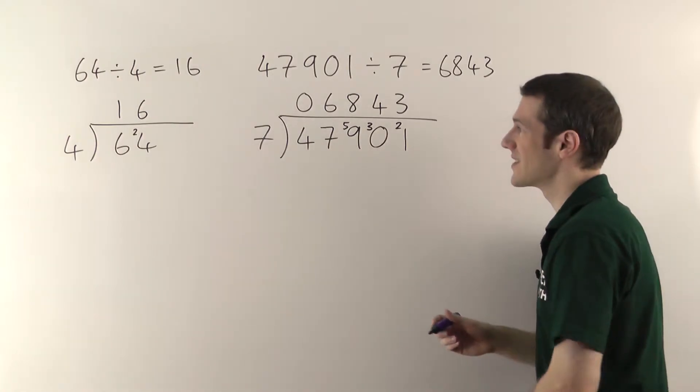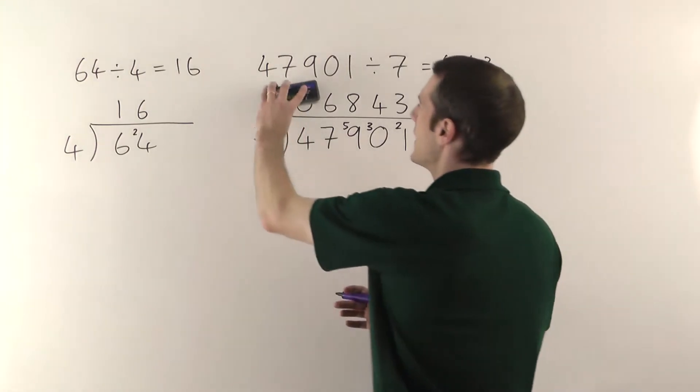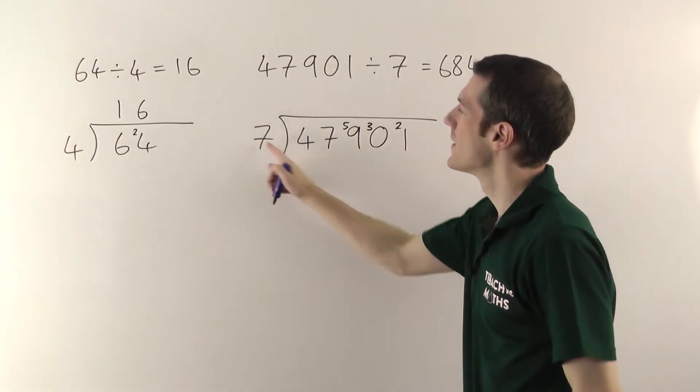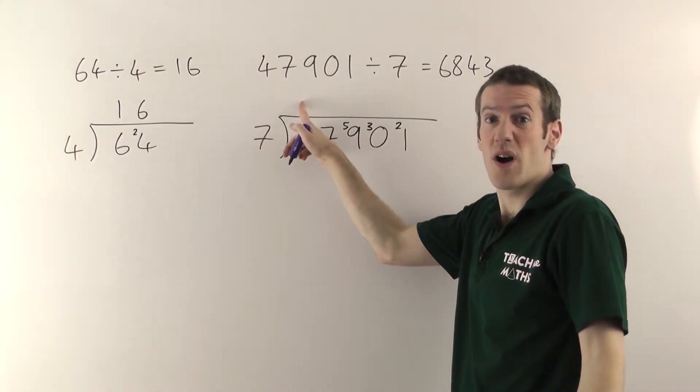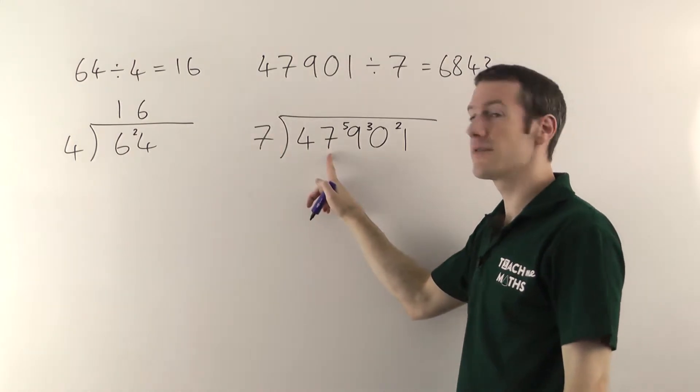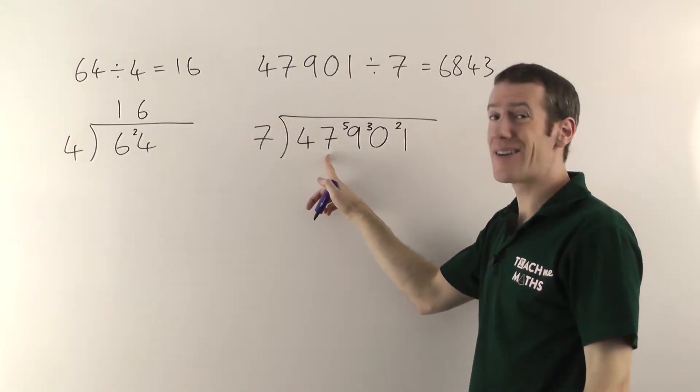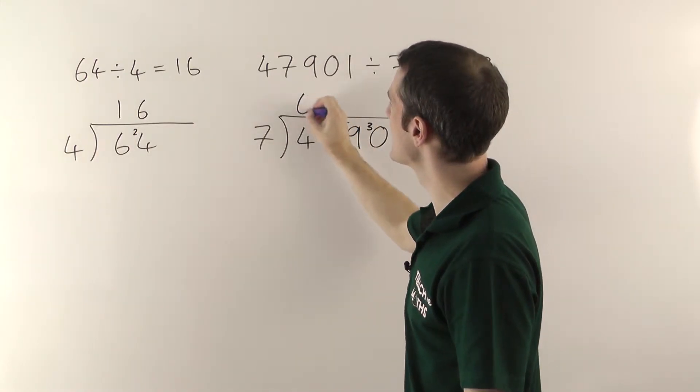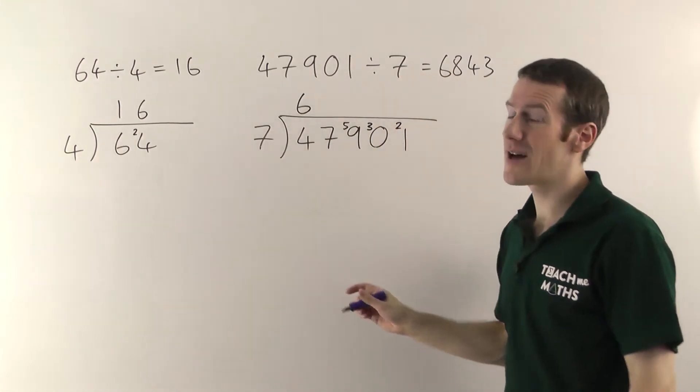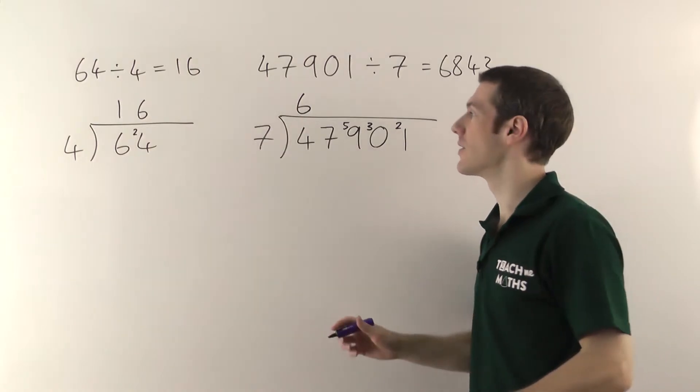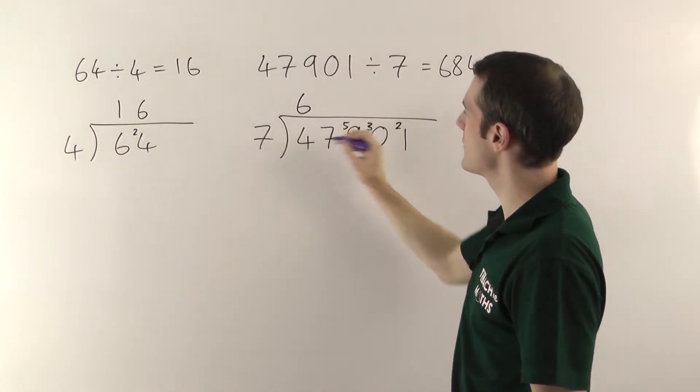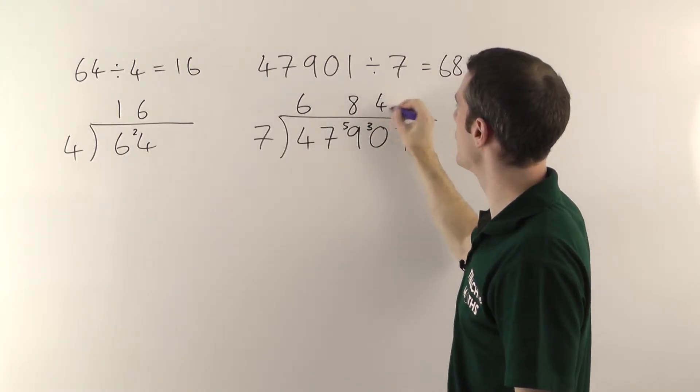Now a little word about this 0 at the front. Some people don't bother writing it there. You don't really need to put it there. Let's just backtrack to where we were at the start here. 7 into 4 go nothing, so why bother writing anything? Just do 7 into 47. However, I do see some people when they do 7 into 47 writing the 6 there. Now if you do that, it's all going to go horribly wrong, because you don't know quite what to put in here.